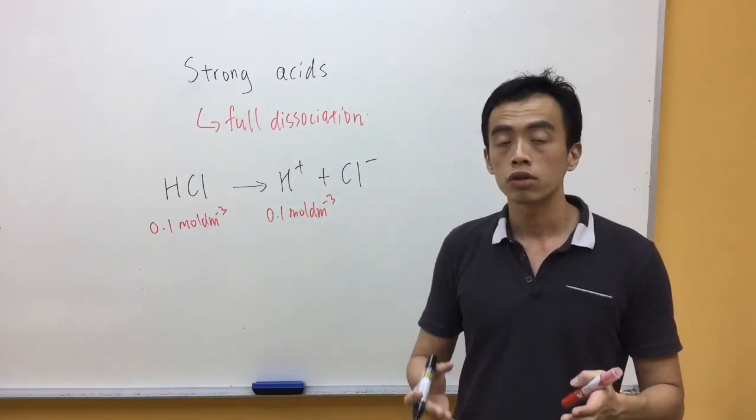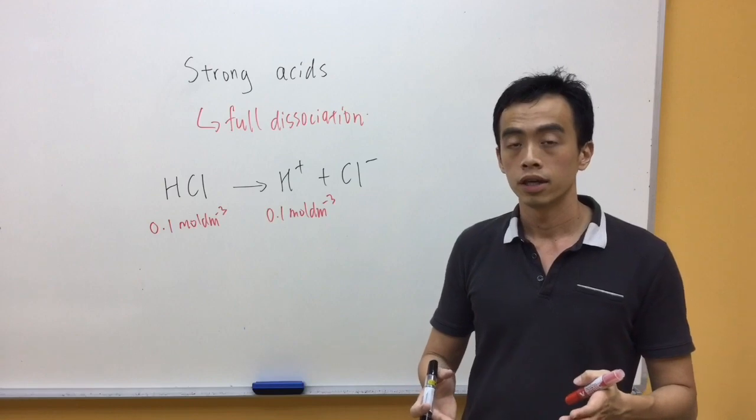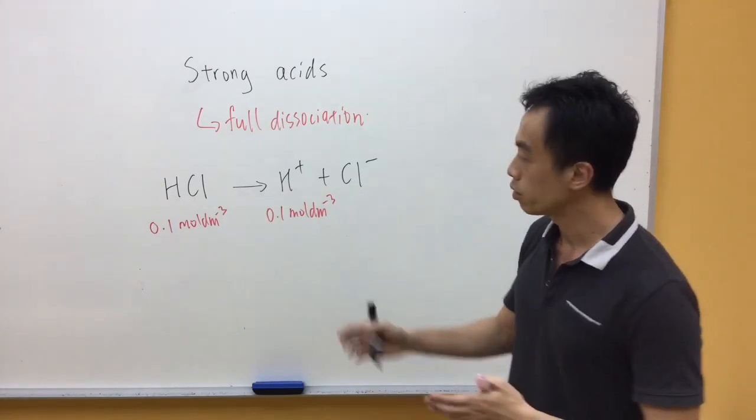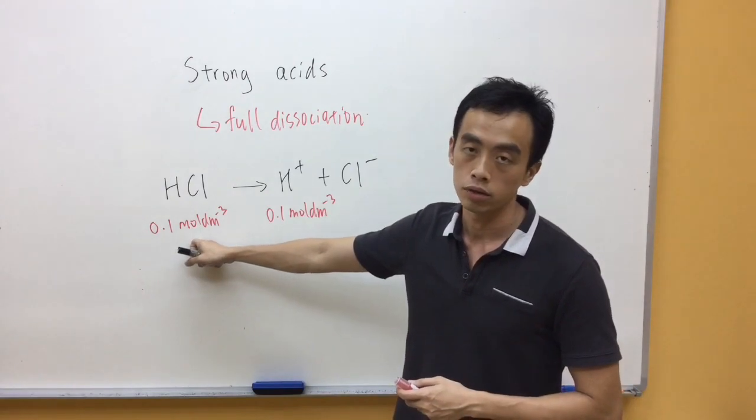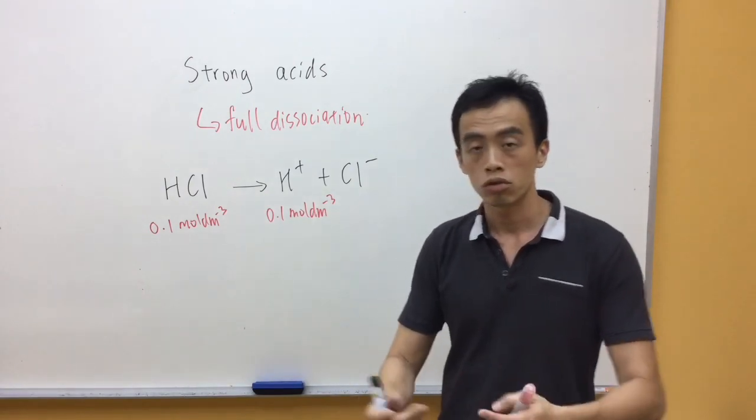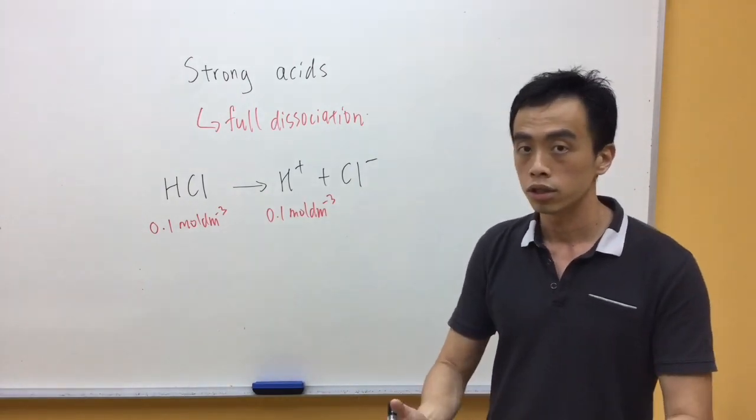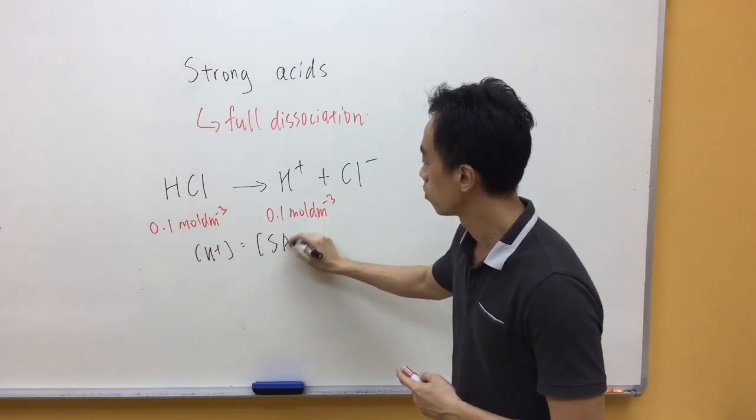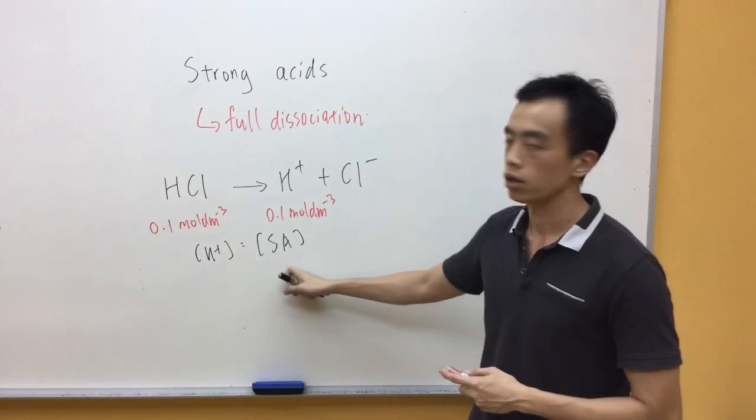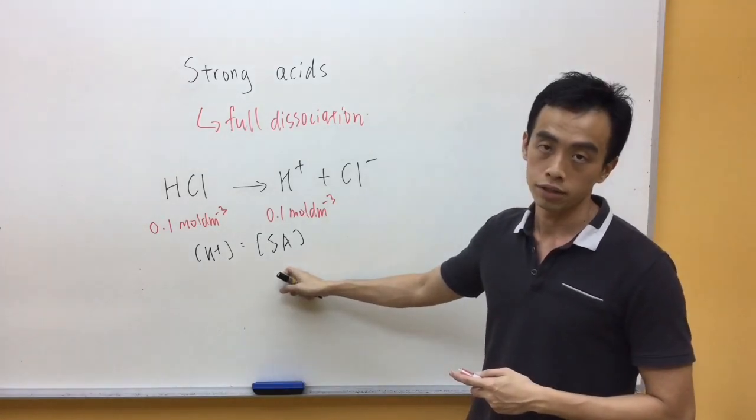Now how do I find the pH of this strong acid? Actually it's very simple. What we already know is the concentration of H plus and the concentration of HCl is the same, because this is a strong acid fully dissociated into solution. The concentration of my H plus will just be the concentration of my strong acid.